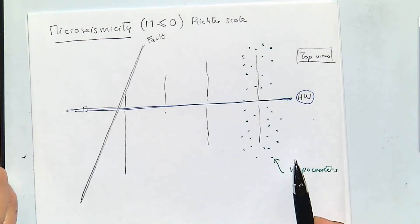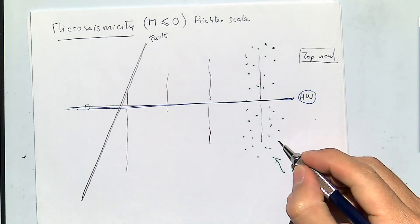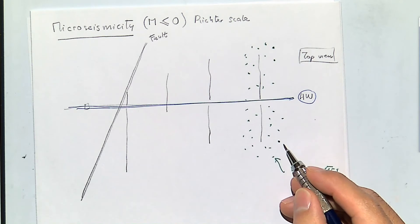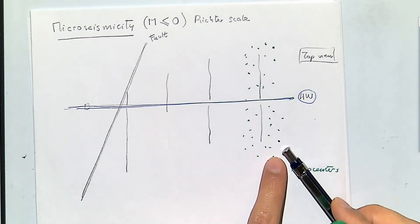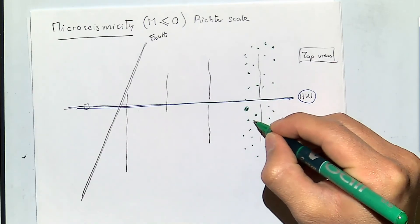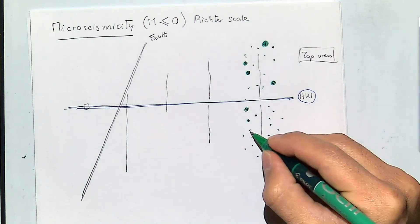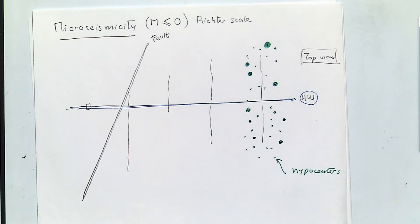Let's think about what is the cause of this acoustic emission. At each of these micro seismic points, something created waves that traveled to a geophone located either at surface or in observation wells, allowing us to locate where the event came from. The size of the plotted circle can represent the magnitude of the event.